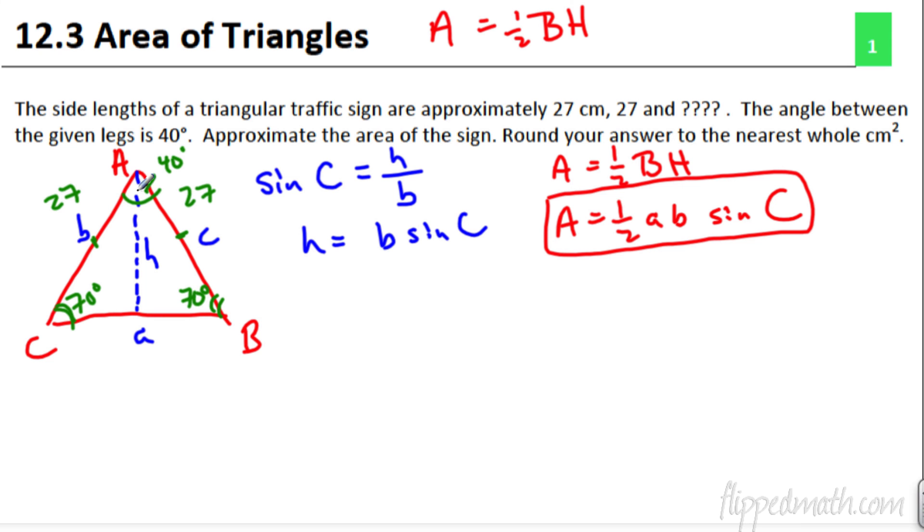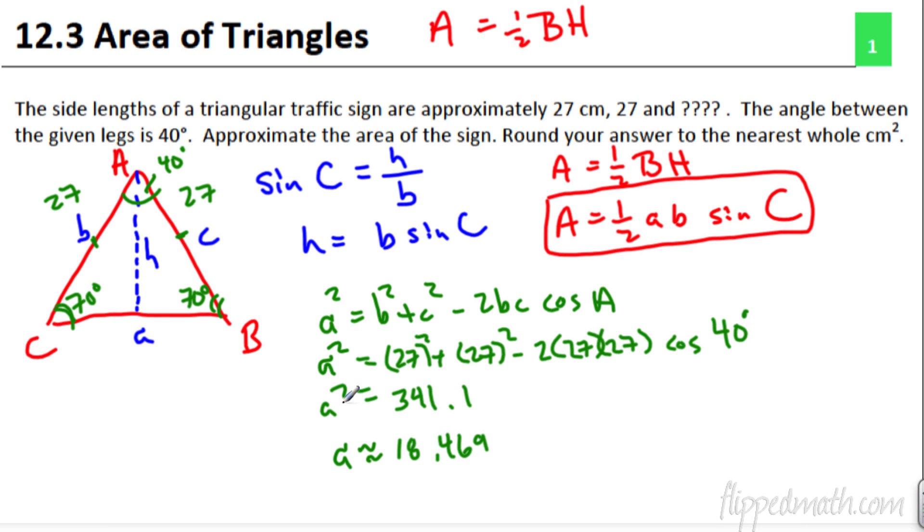I'm going to find this opposite side here using the law of cosines. A squared equals B squared plus C squared minus 2BC times the cosine of A. So, let's plug all those numbers in. Then we figure it all out. We get A squared is 341.1. Don't forget to take square root. We get 18.469.